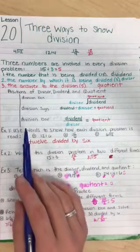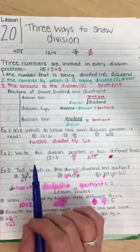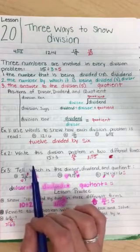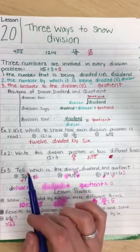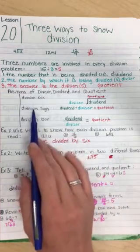These numbers are called dividend, divisor, and quotient. In this example above, the dividend is 15, the divisor is 3, and the quotient is 5. The location of these numbers in each form is shown right here.